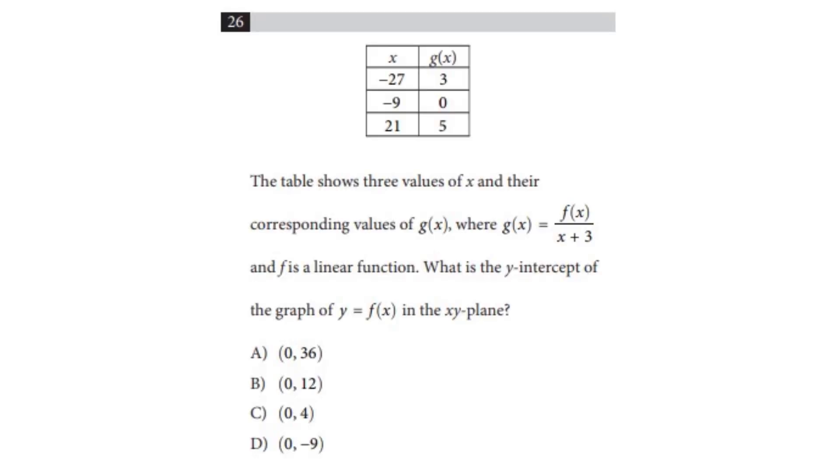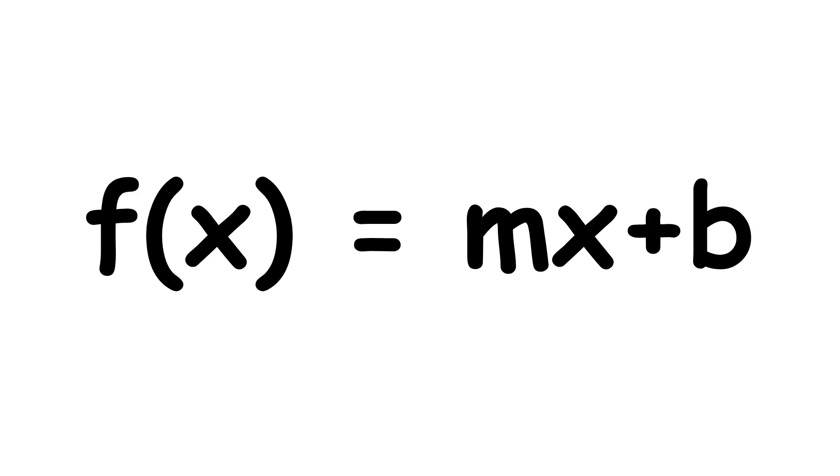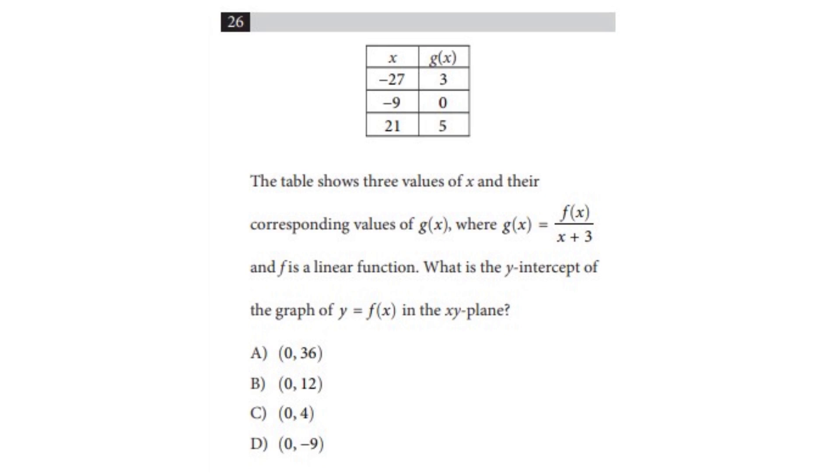Now, this next question is by far one of the craziest ones you can use Desmos on. The question gives us a table of values for the inputs or x values and the outputs or the different values of g of x. The question also tells us that g of x equals f of x over x plus 3 where f of x is a linear function. Since f of x is a linear function, we know that f of x can be written in the form mx plus b. The question then tells us to find the y-intercept of f of x.